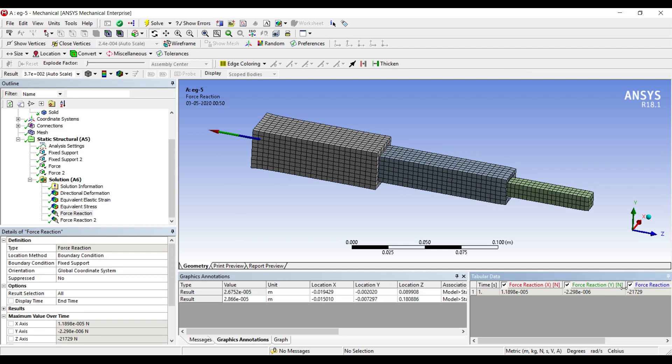You can see the value over here in z direction is minus 21.729 kilonewton and the force reaction at this end is minus 8.271 kilonewton. So these are the answers of force reaction that I have got.